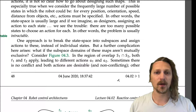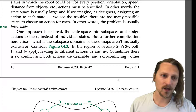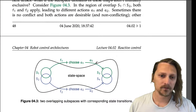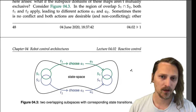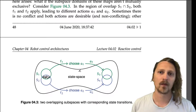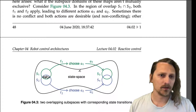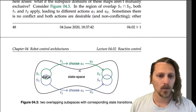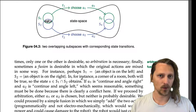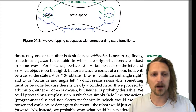One approach is to break the state space into subspaces and assign actions to these instead of individual states. But a further complication arises: what if the subspace domains of these maps aren't mutually exclusive? In the region of overlap, S1 intersect S2, both F1 and F2 apply, leading to different actions A1 and A2. Sometimes there is no conflict; other times only one is desirable and arbitration is necessary, or a fusion of the original actions is desirable.